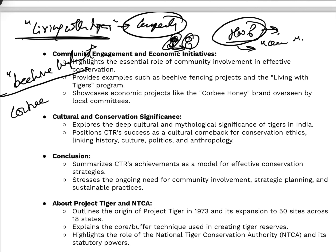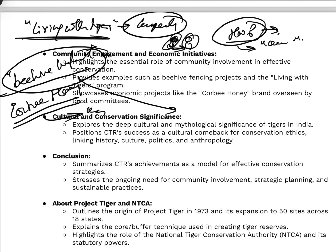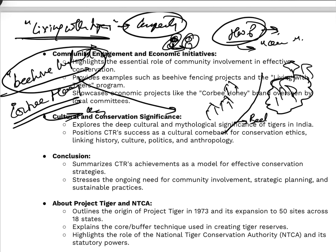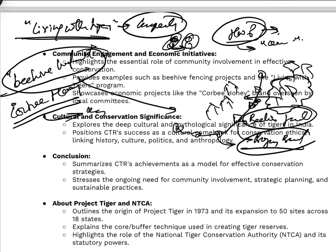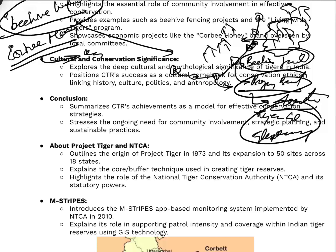There is also an approach known as beehive fencing, also called the Corbett Honey project, taken up by local communities. In this concept, a beehive fence is placed as a border between village areas and tiger reserve areas. When a tiger tries to intrude into the village, the bees create a buzzing sound that is irritating to wild animals such as tigers and elephants, deterring them. Corbett Tiger Reserve is also known for its mythological and deep cultural significance.